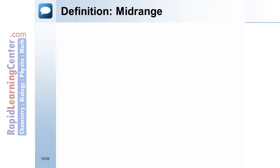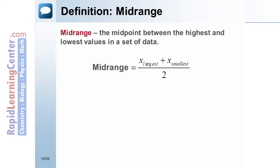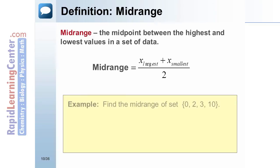Definition: Midrange. The midrange is the midpoint between the highest and lowest values in a set of data. Example: Find the midrange of the set 0, 2, 3, 10. The midrange is the sum of the smallest value and the largest value divided by 2: 0 plus 10 divided by 2. The midrange is 5.